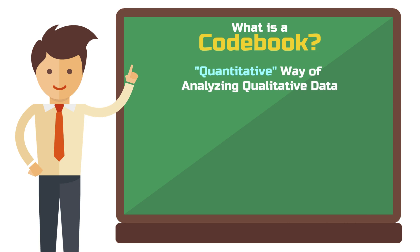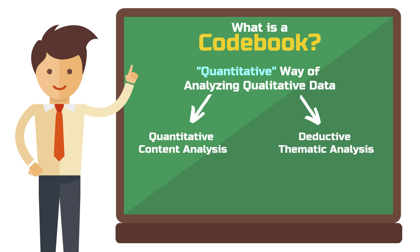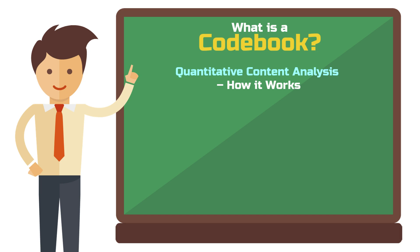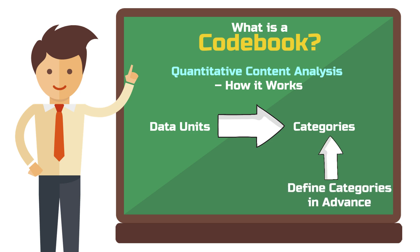Let's start with the quantitative way of analyzing qualitative data. This is done in methods such as quantitative content analysis or deductive thematic analysis — I've made tutorials for both of these methods, so please feel free to check them out. In a quantitative content analysis, you assign small bits of your qualitative data to certain categories. In the case of this method, you do not develop these categories yourself. Instead, you define them prior to your analysis. And how do you do that?